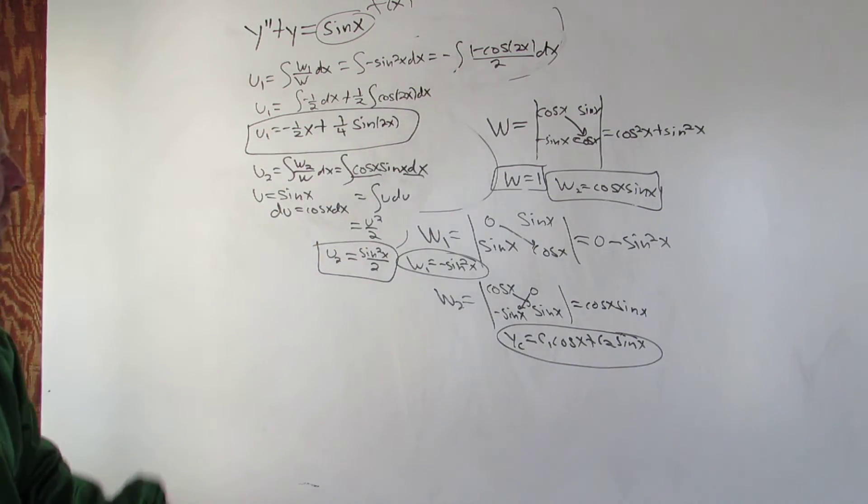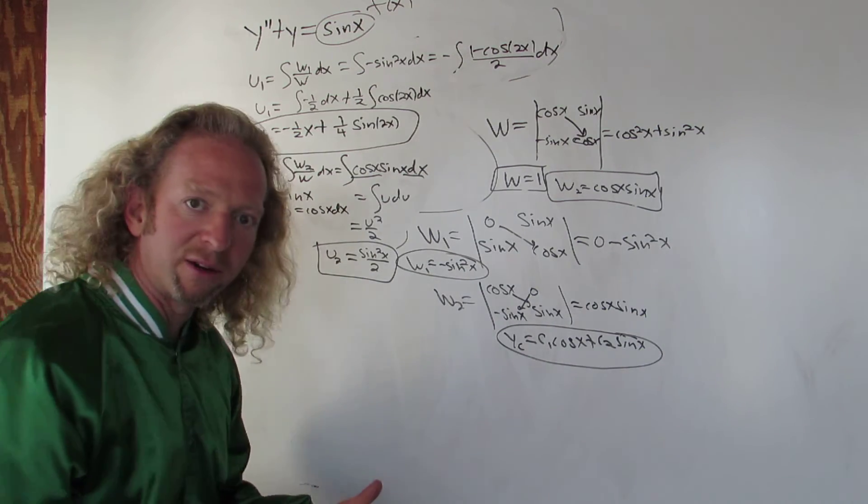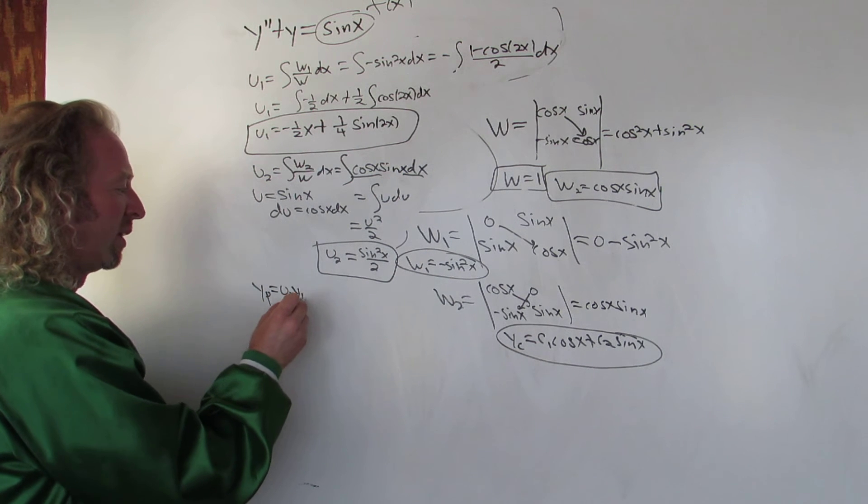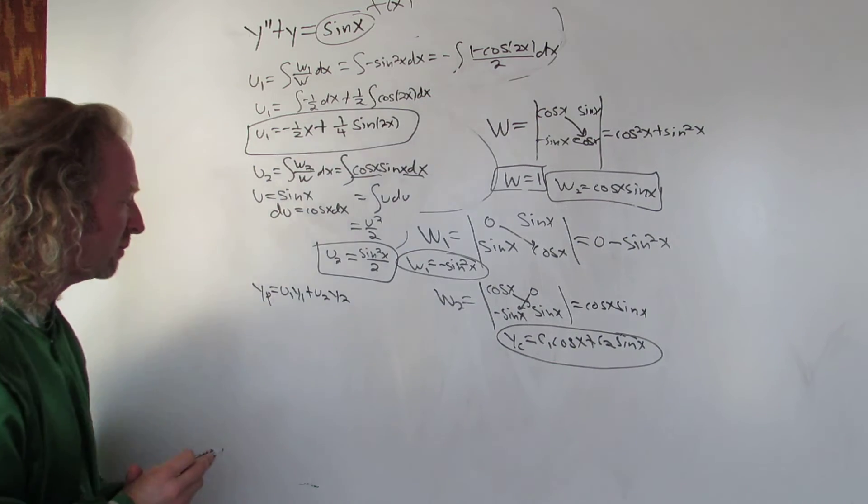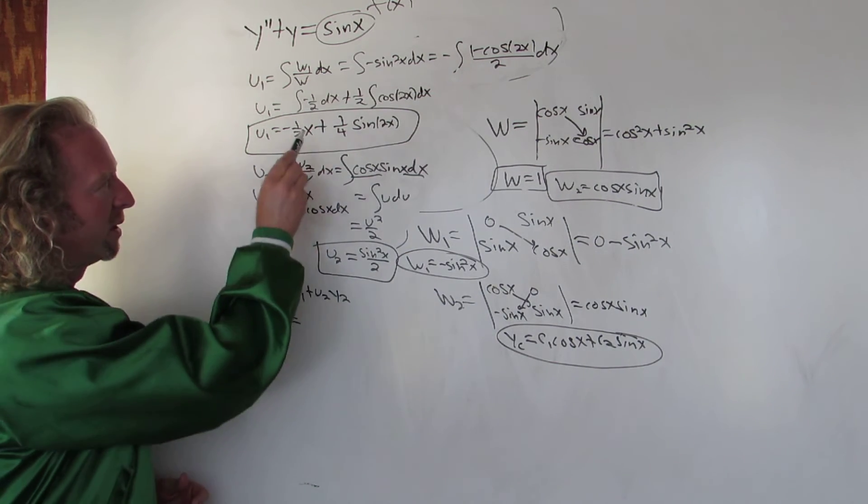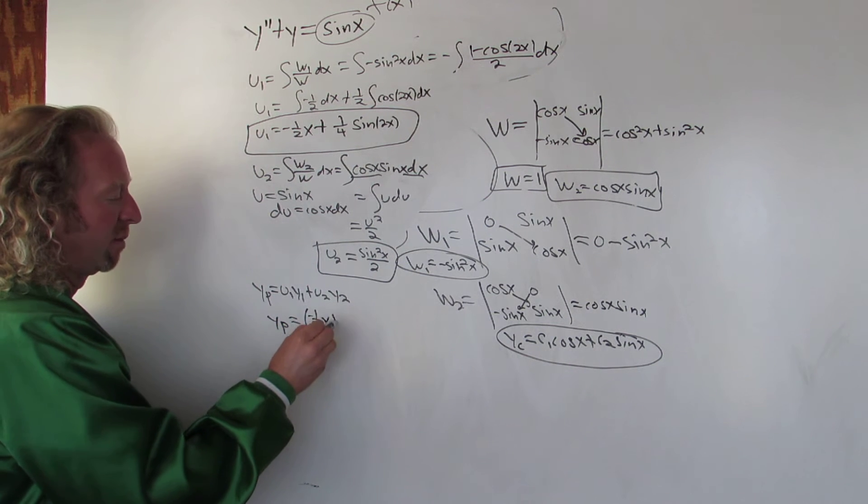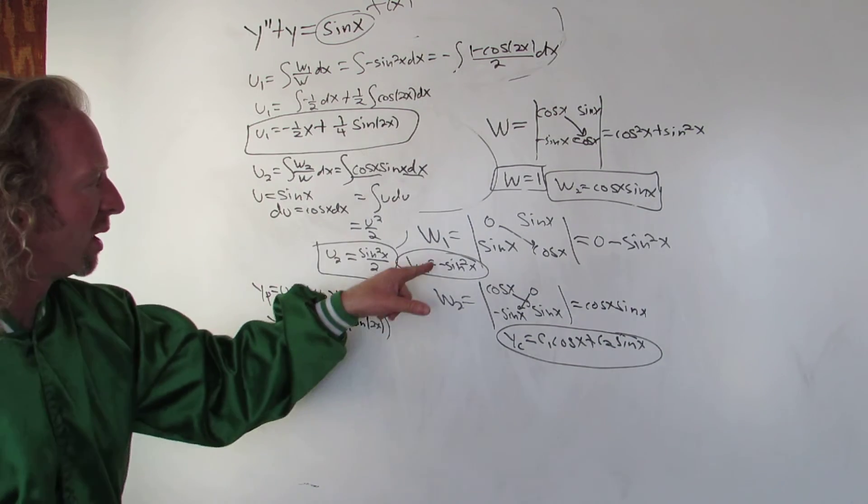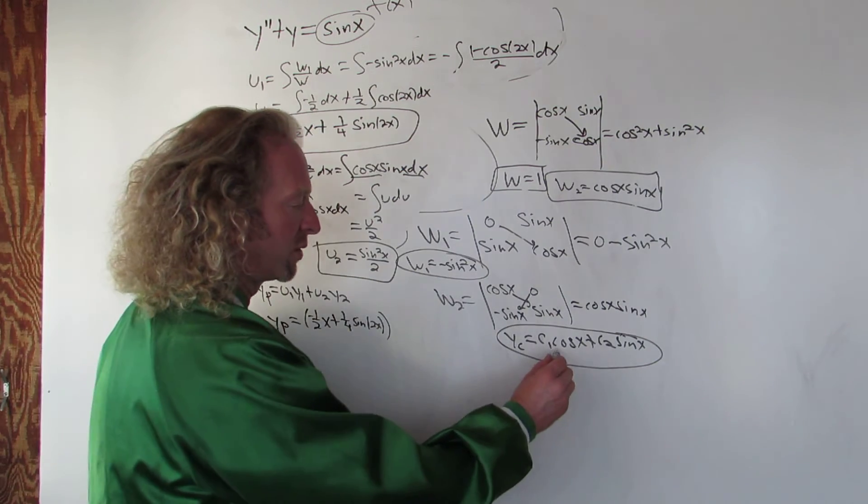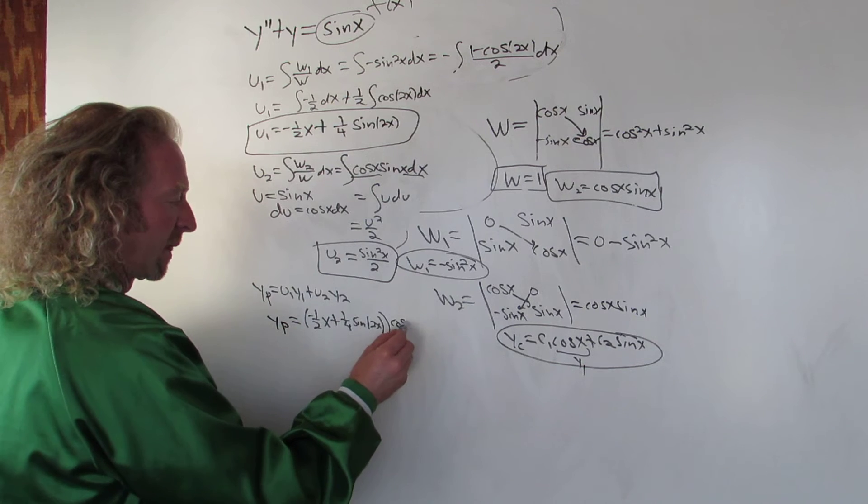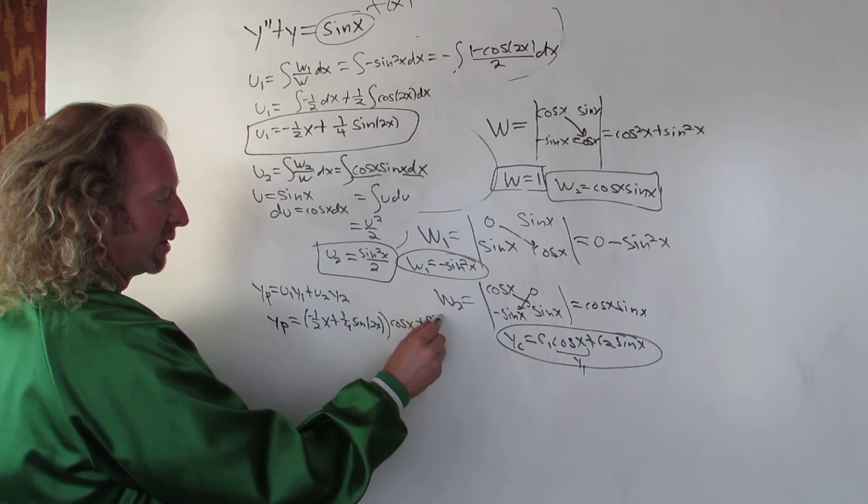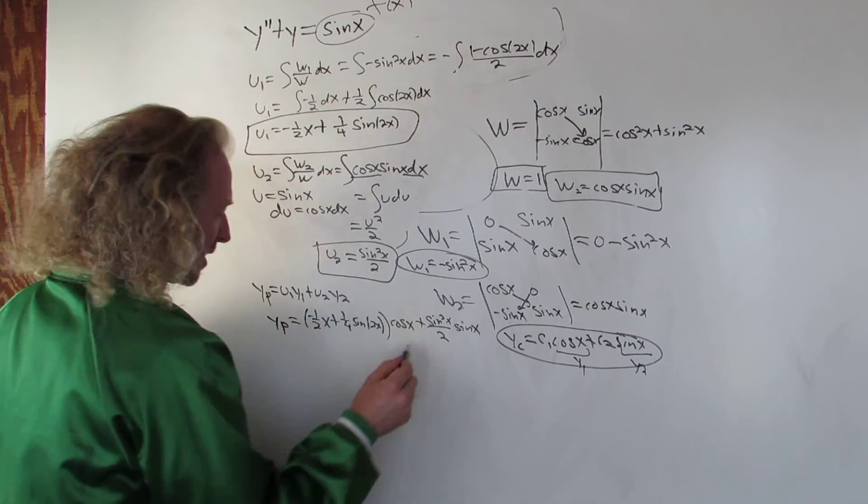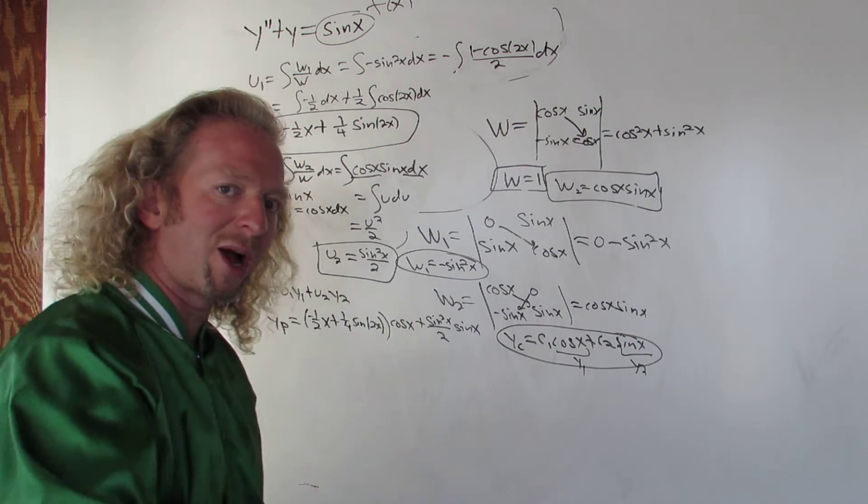We're almost there. We've got our u's. Now we're going to form the particular solution, yp. So yp is u1 y1 plus u2 y2. So u1 is right here, negative 1 half x plus 1 fourth sine 2x. That's our u1. Our y1 was cosine x. And then u2 is sine squared x over 2, and our y2 was sine x. That's our particular solution.